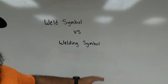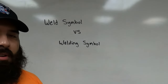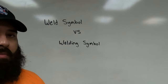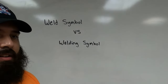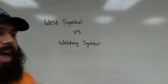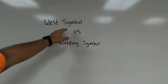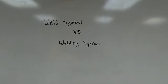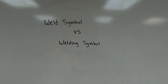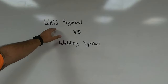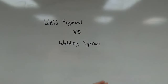The welding symbol is the weld symbol along with all the other bits of information about how we prepare the material, how we weld it, and any after-weld procedures. To recap: the weld symbol is the shape or icon telling us what type of weld we're making — whether that's a groove weld, fillet weld, spot weld, or anything like that — and the welding symbol is the weld symbol plus everything else.